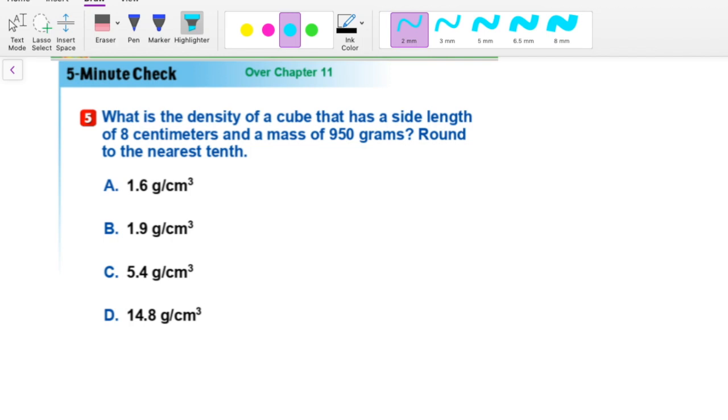Alright, so without any further ado, what is the density of a cube that has side length of 8 centimeters and a mass of 950 grams, round to the nearest tenth? Okay, so this is a really easy problem once we understand one thing. We just need to know the formula for density.